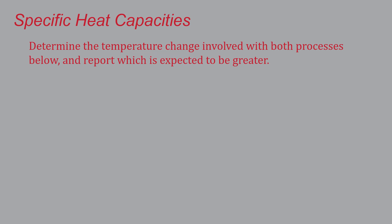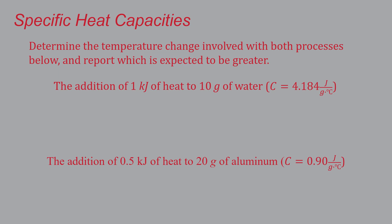So to give you a little practice with this, let's determine the temperature change involved in these processes below and report which is expected to be greater. Process one, we're going to add a kilojoule of heat to 10 grams of water, heat capacity 4.184 joules per gram per degree Celsius, or the addition of half a kilojoule of heat to 20 grams of aluminum with its heat capacity at 0.9 joules per gram per degree Celsius. So I'll let you hit pause and you can plug and chug the equation that we had on the previous slide and come up with your answer. And hit play when you're done. Okay, you're done.